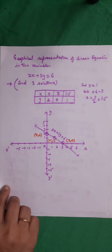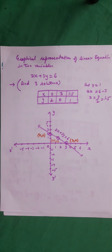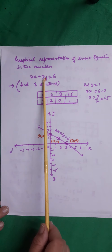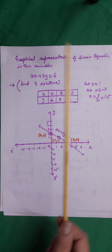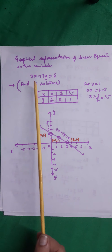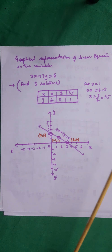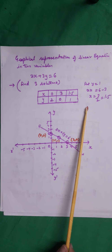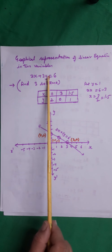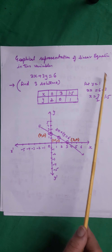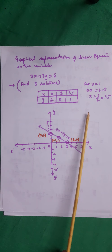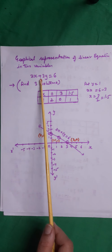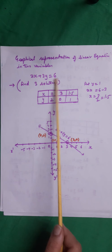Next: graphical representation of linear equations. Now that you know how to make a table of values for a linear equation in two variables, we will use that. Whenever you do graphical representation of a linear equation in two variables, always find at least three solutions. So here we have 2x plus 3y equals 6.